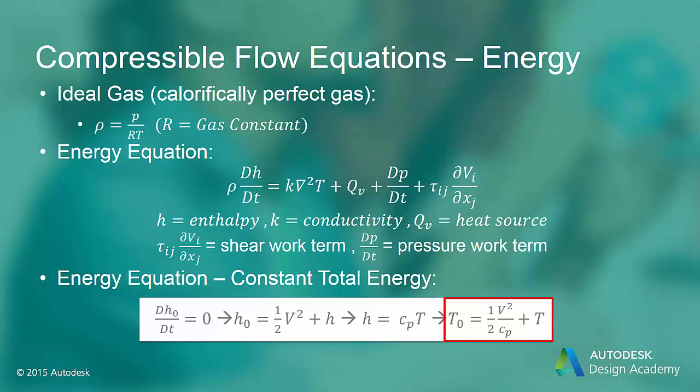So an approximation that is frequently used is that total energy is constant. As you can see from the progression, this leads to the constant total temperature equation. This greatly reduces the complexity of compressible flow and is quite valid for most practical compressible flow simulations. The exception to the constant total temperature is when there is heat transfer or the work terms become important.